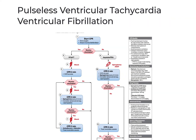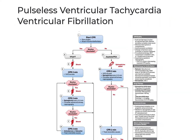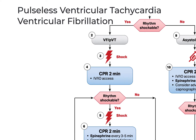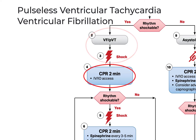VFib and pulseless VTAC are the only shockable rhythms. So if you find your patient in these rhythms at any point, defibrillation is your immediate priority. After defibrillation, we do not wait to see if it worked — we immediately start CPR. Even if defibrillation is successful, the heart is likely to need the support that CPR provides for at least a couple minutes, and we build our resuscitation strategy around two-minute cycles of CPR.